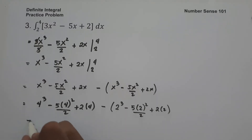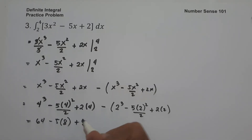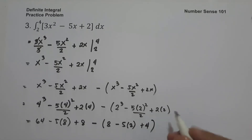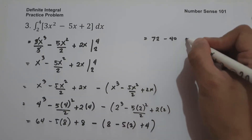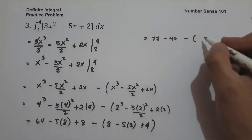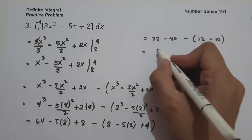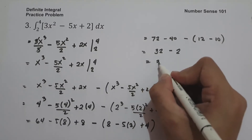Simplifying: 4 cubed is 64, minus 5 times 16 divided by 2 is 40, plus 2 times 4 is 8. That gives 64 minus 40 plus 8, which is 32. Minus the quantity: 2 cubed is 8, minus 5 times 4 over 2 is 10, plus 2 times 2 is 4, giving 8 minus 10 plus 4, which is 2. So 32 minus 2 equals 30, and this is our answer.